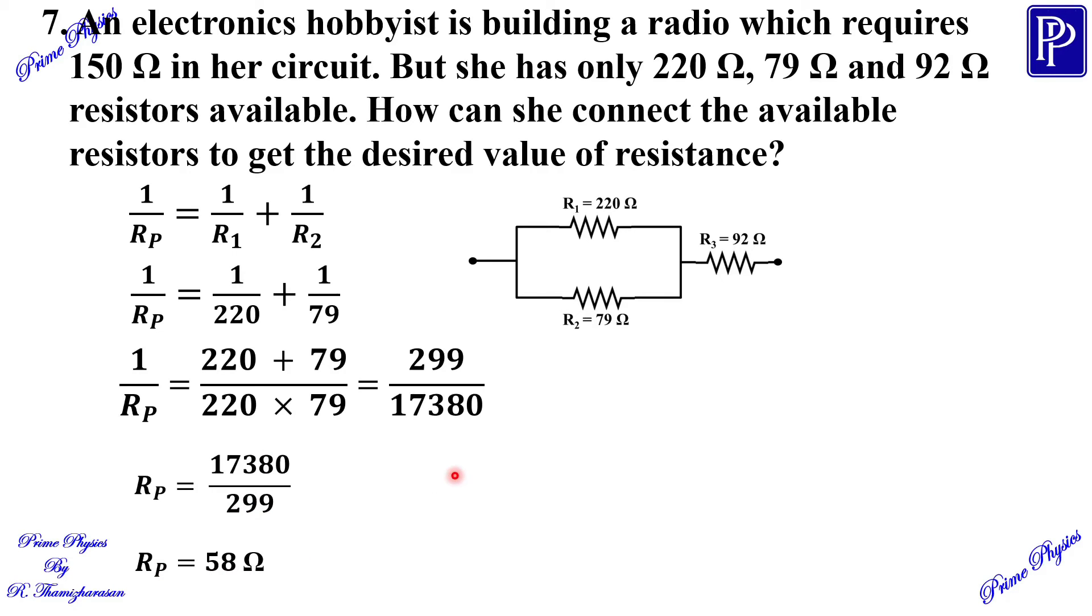Now, this Rp and R3 are connected in series. The resultant resistance Rs = Rp + R3. Rp = 58, R3 = 92. Adding these values, Rs = 150 ohm.